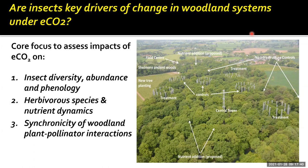These sorts of changes can have a big impact on other parts of the system. We also wanted to look at synchronicity of woodland plant-pollinator interactions — whether elevated CO2 might alter the dynamics of flowering plants within the wood and change phenology patterns. Another reason this might happen is that elevated CO2 can change the timing of canopy bud burst, and also influence the duration and density of the canopy, which could have implications for flowering plants at the field level.